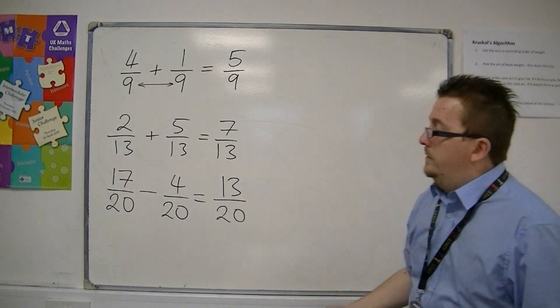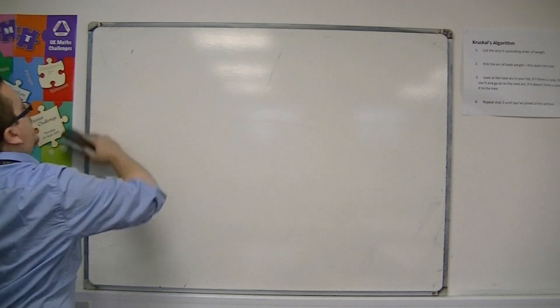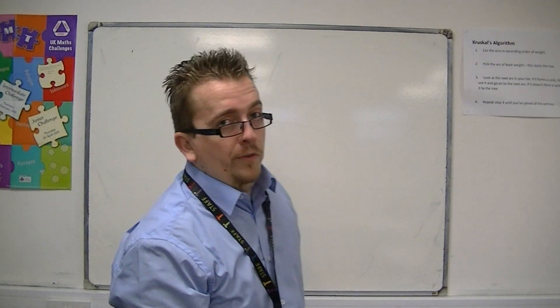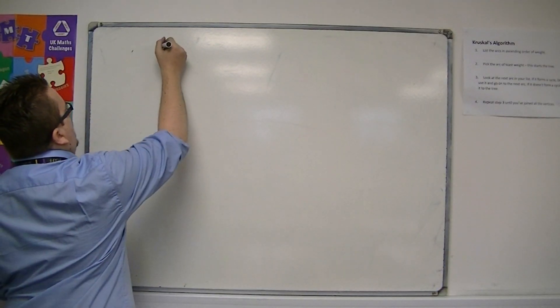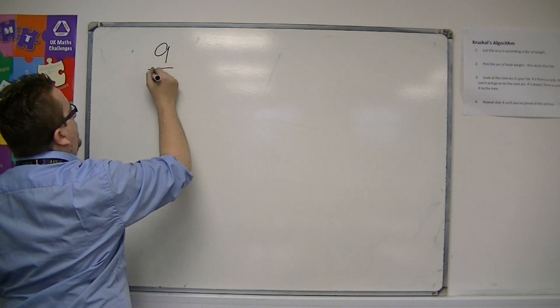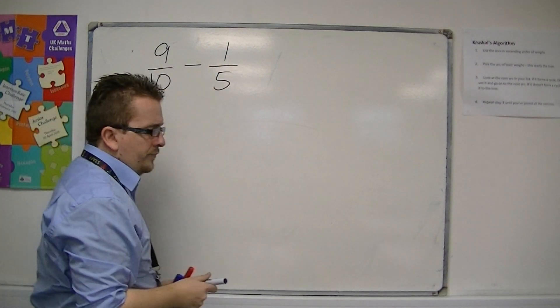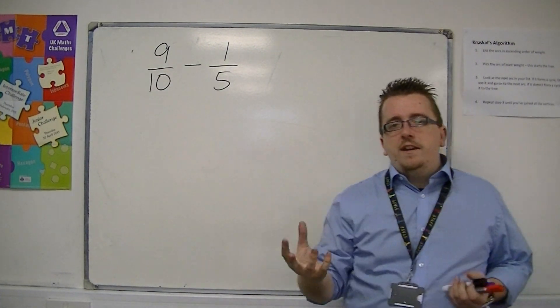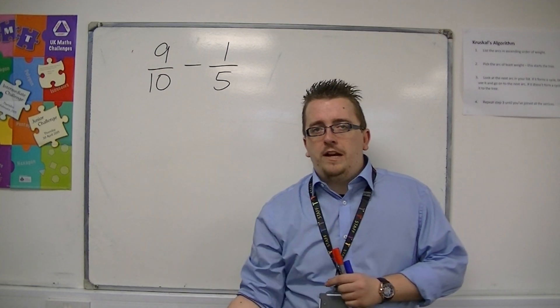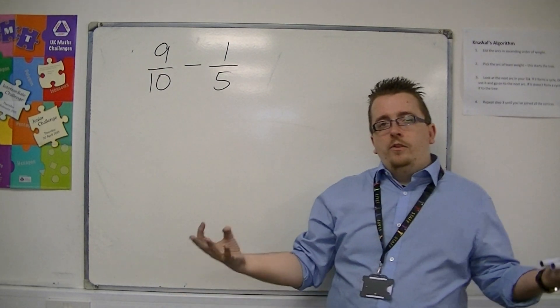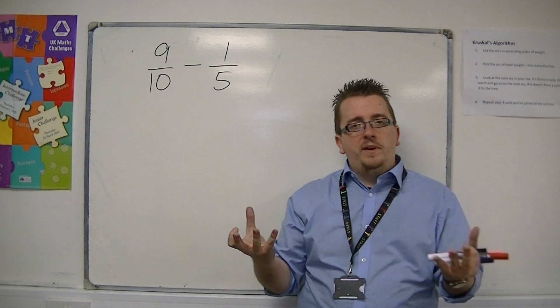If, however, they're not the same, then we get into the realm of ever-increasing difficulties. If you had something like 9 tenths and you wanted to take away 1 fifth, then you can utilize both your knowledge of equivalent fractions and the knowledge that you can add and subtract fractions when the denominators are the same.